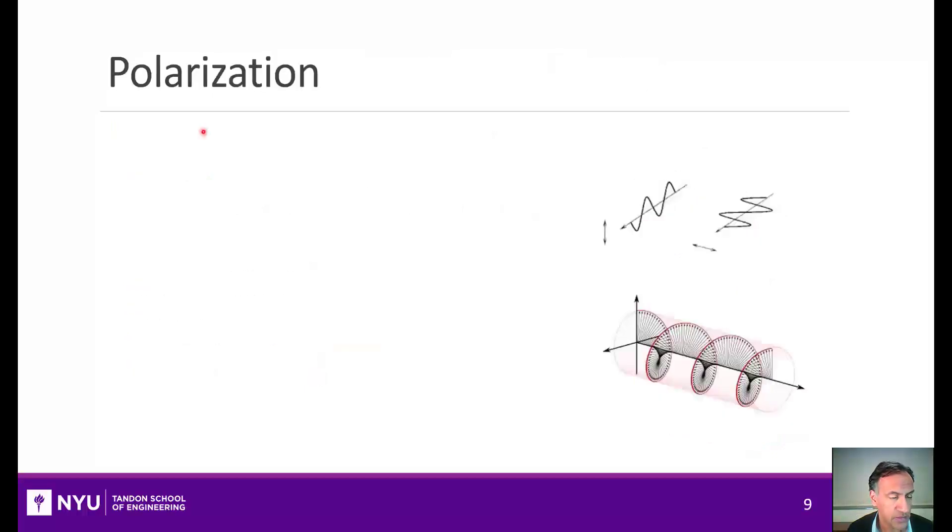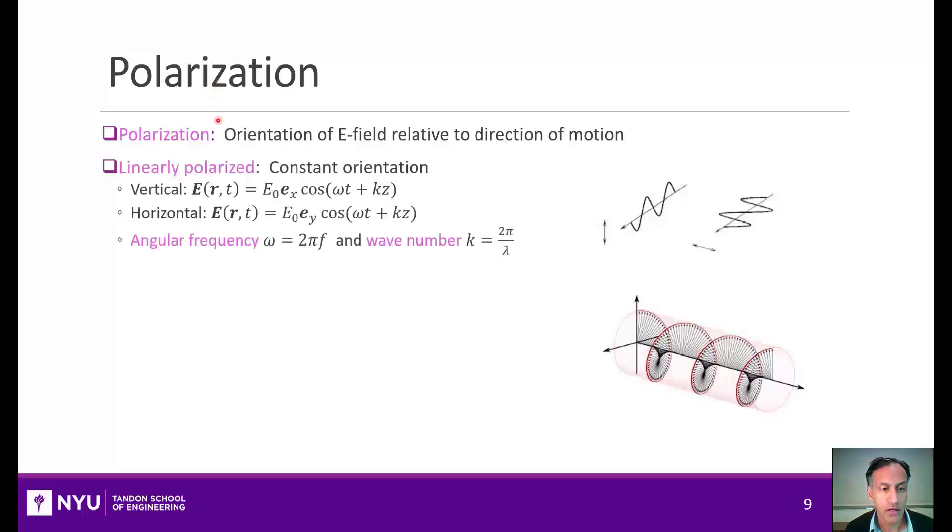One more thing, a little detail, that I want to talk about is polarization. The electric field is always perpendicular to the direction of motion. And the orientation of that electric field relative to the direction of motion is called the polarization. If you had a linearly polarized wave, you can think about it as having some wave with a constant orientation.